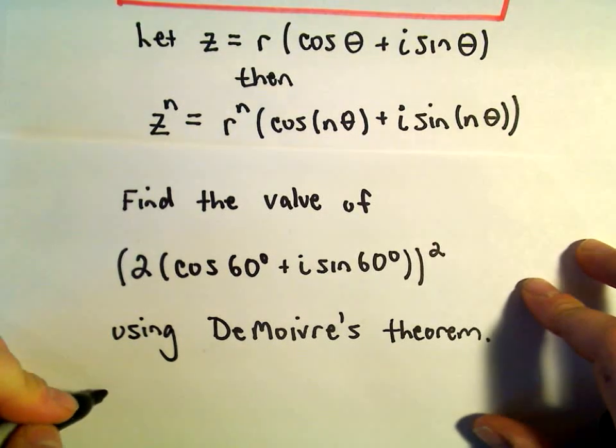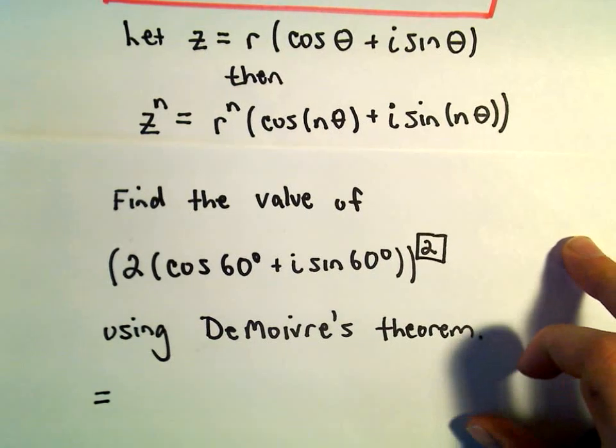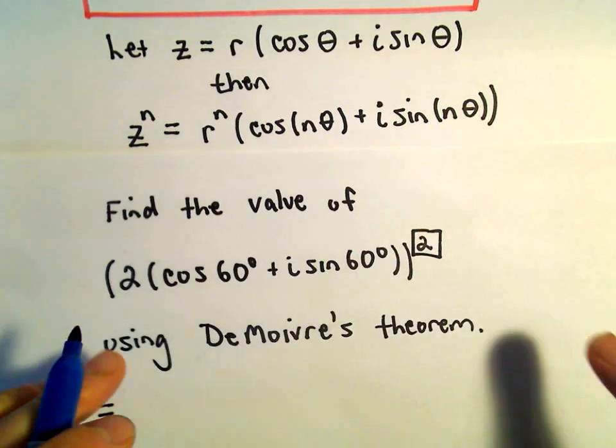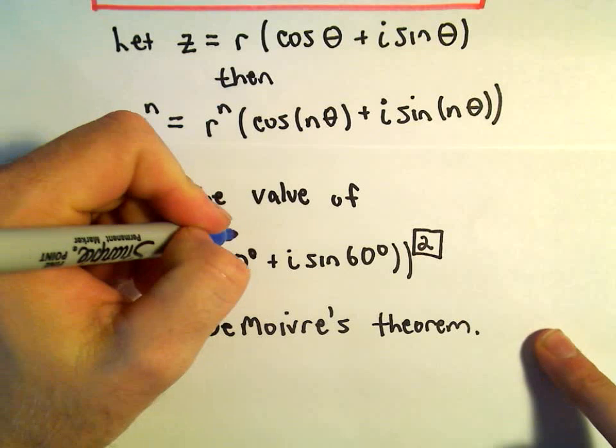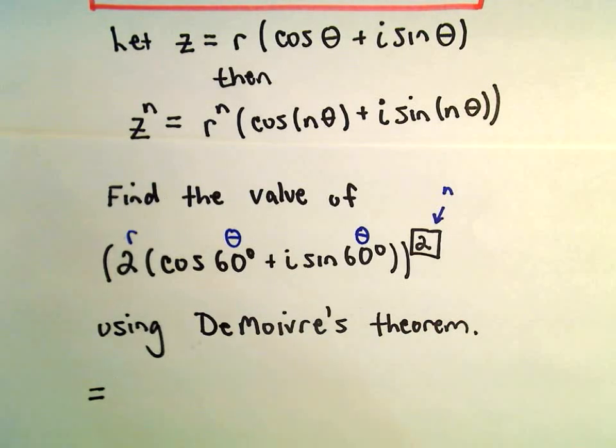Okay, so all we have to do in this case, so here to the second power, that's going to be our value of n. So here's our r, here's our theta, and our theta. This will be our value of n.